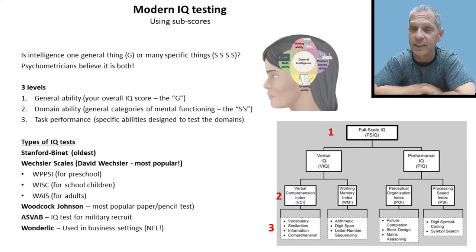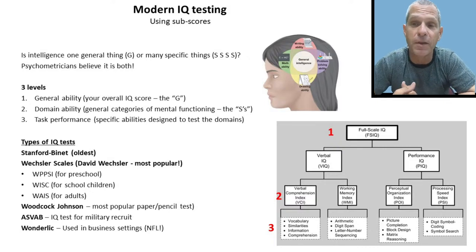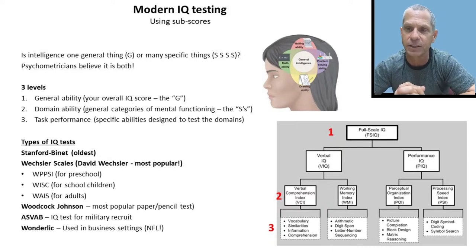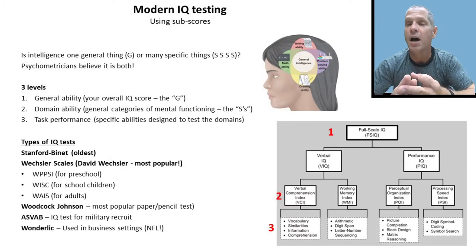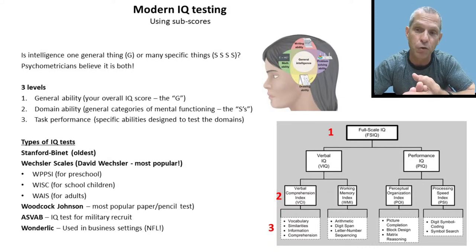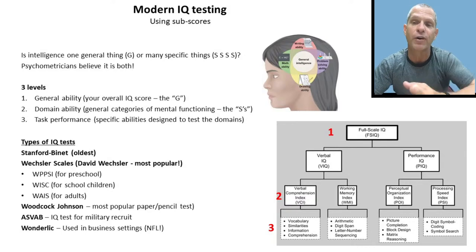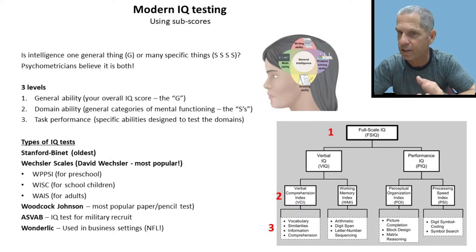The Woodcock-Johnson test is probably the test most of you took in middle school — the most popular paper-and-pencil test. The problem with a paper-and-pencil test, as opposed to a one-on-one test with a clinical psychologist, is that language problems, reading difficulties, and attention problems — things that are not IQ — might affect your performance. A clinical psychologist would notice these factors in a one-on-one setting.